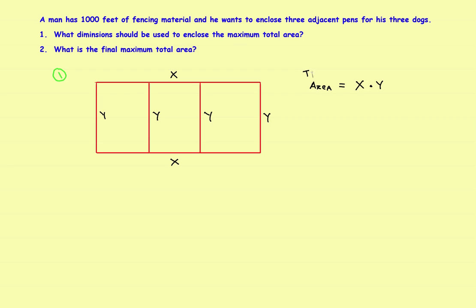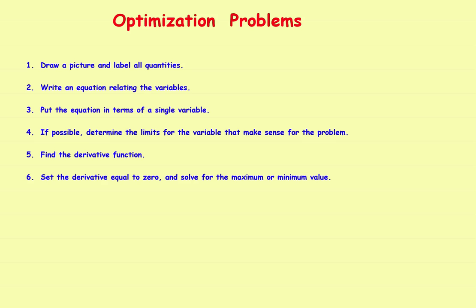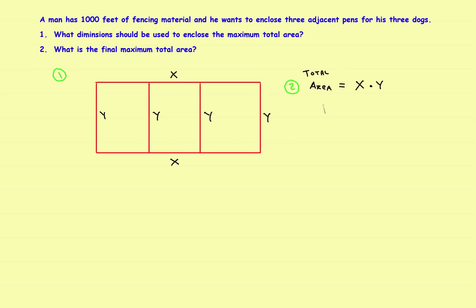Step three is usually the hardest part — getting the equation in terms of a single variable. We have A = x · y, but we can't have two variables. We'll put it in terms of y. Imagine stretching the 1,000 feet of fencing out on the ground: you'd have two sections of x and four sections of y, so 2x + 4y = 1,000.